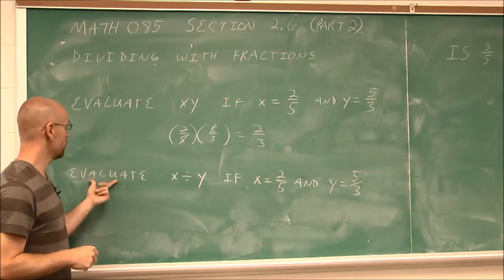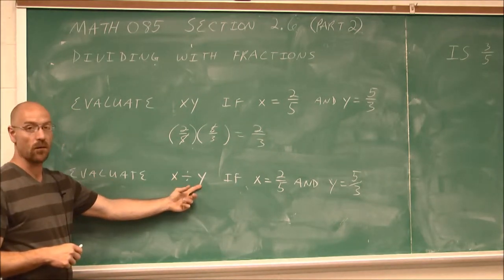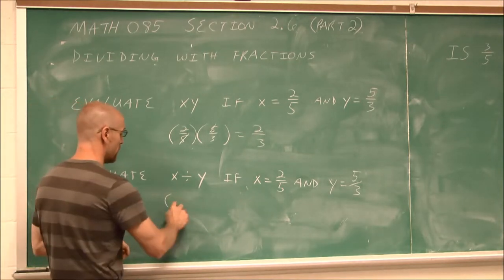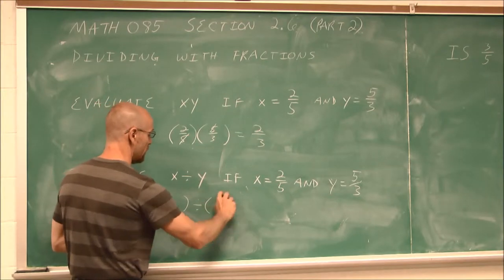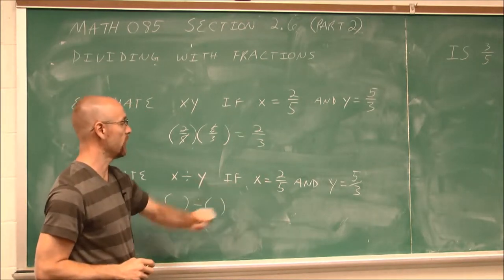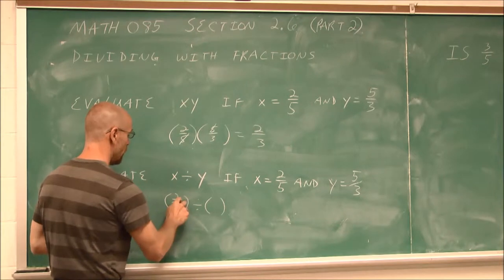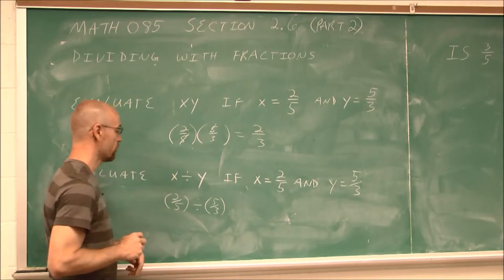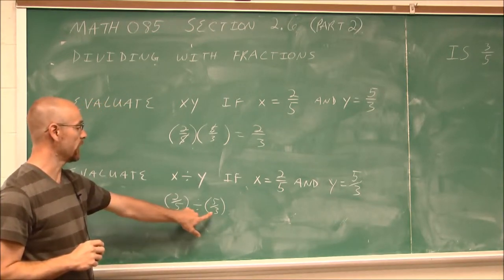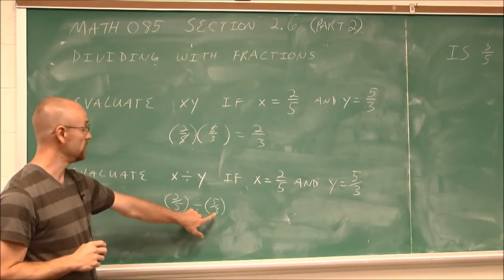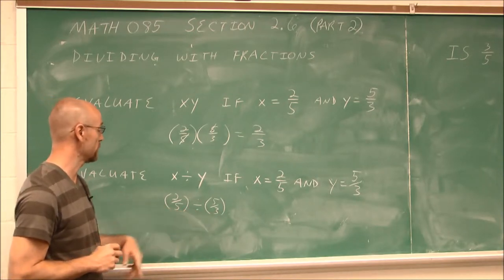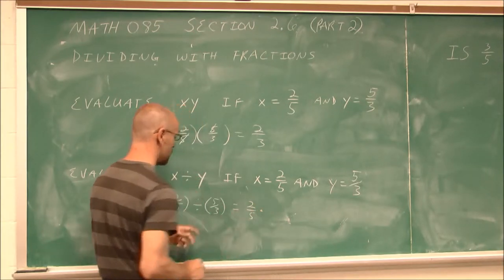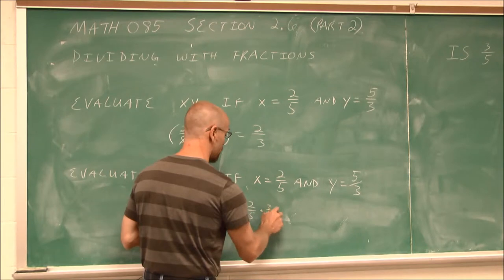What if we are asked to evaluate x divided by y? So this one was multiplication, now this one is division. We're going to do the same thing — x divided by y — and we're asked to evaluate for these same values: 2 fifths divided by 5 thirds. To divide fractions, we have to find the reciprocal of our divisor. So I'm going to rewrite this as 2 fifths times the reciprocal of 5 thirds, which is 3 fifths.